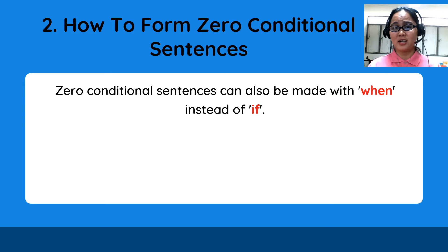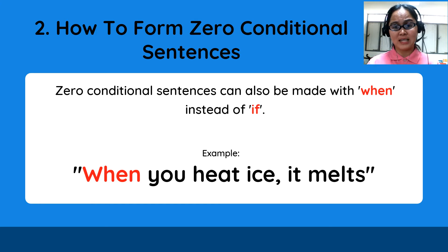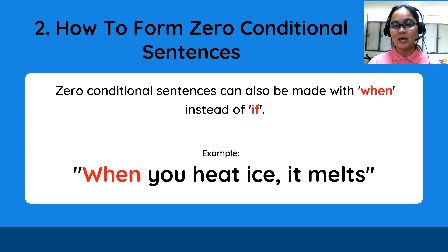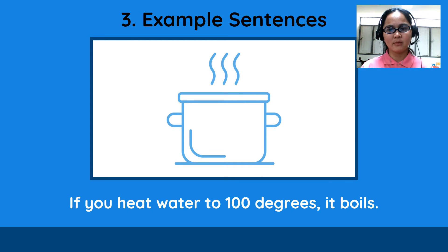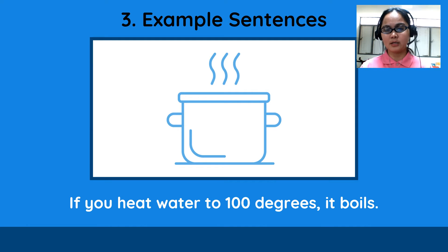Zero conditional sentences can also be made with 'when' instead of 'if.' For example: when you heat ice, it melts. Another example: if you heat water to 100 degrees, it boils.